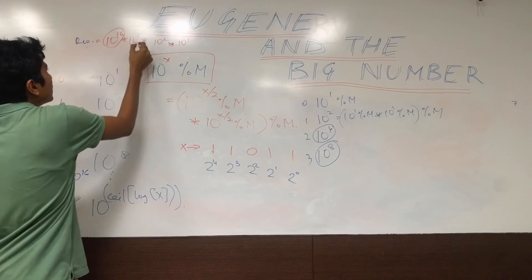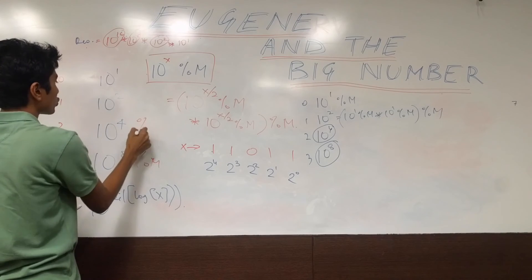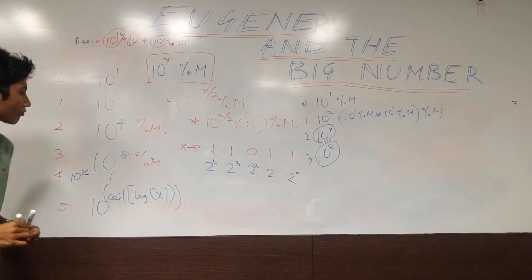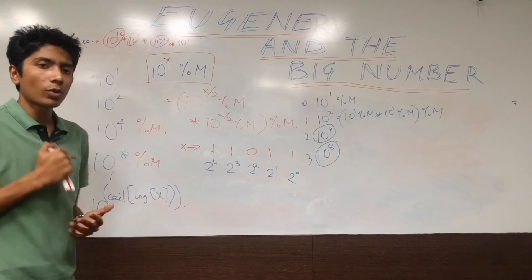And of course, these values are very small because you have modulo m with each one. So that's it. Binary exponentiation is going to solve this problem for you.